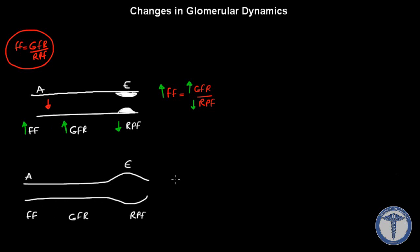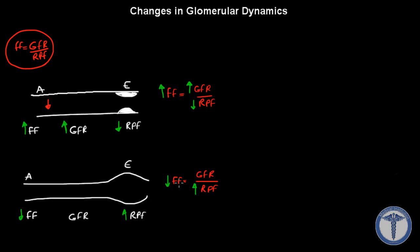Again, write down the formula. The only difference now is that the efferent arterioles have vasodilation. Think of it as getting onto a highway — you're traveling at normal speed and then your speed increases. So renal plasma flow will increase. Filtration fraction, which is opposite to renal plasma flow, will decrease. Therefore, GFR — which moves in the same direction as filtration fraction — will also decrease.